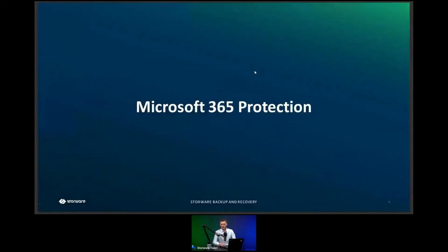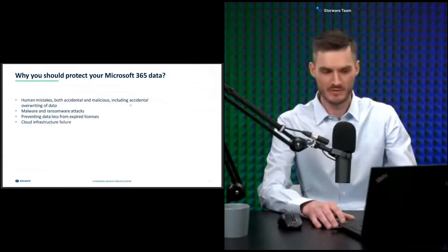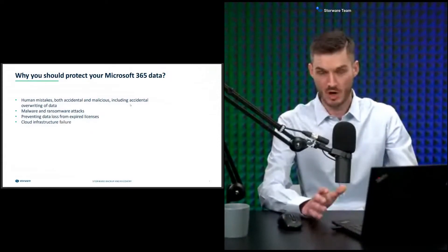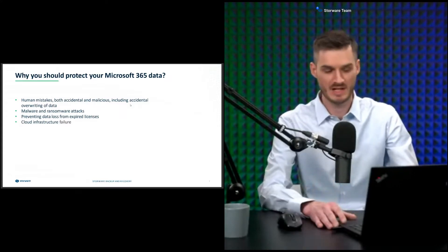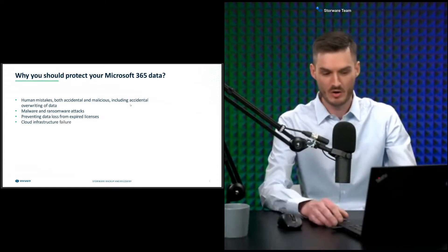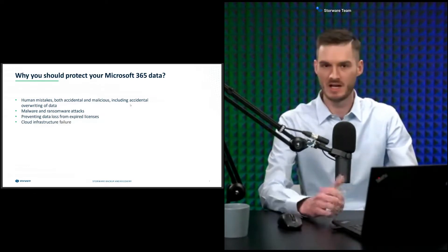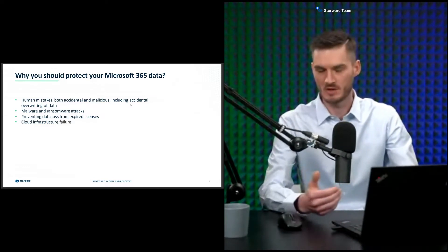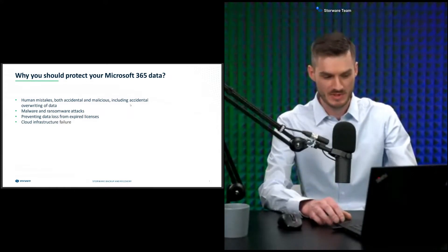Our main goal for today is to protect Microsoft 365. The question is simple: why do we want to protect Microsoft 365 objects? The answer is straightforward — to avoid issues when a disaster happens, when there are human mistakes, or in the event of a ransomware attack. You can easily restore users' mails and documents on OneDrive, or even conversations in Teams.